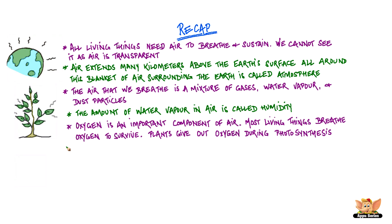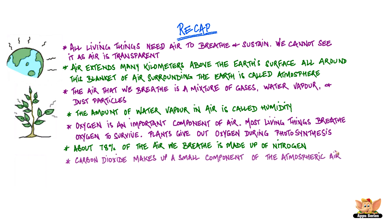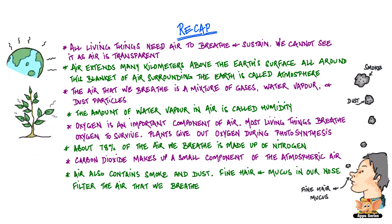Plants give out oxygen during photosynthesis. About 78% of the air that we breathe is made up of nitrogen. Carbon dioxide makes up a small component of the atmospheric air. Air also contains smoke and dust.